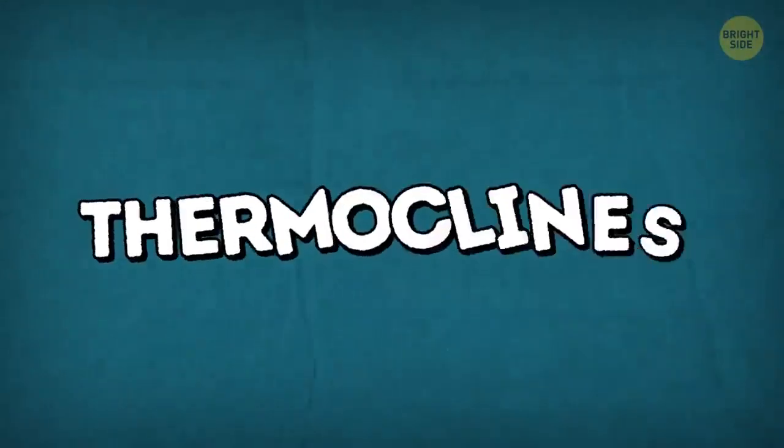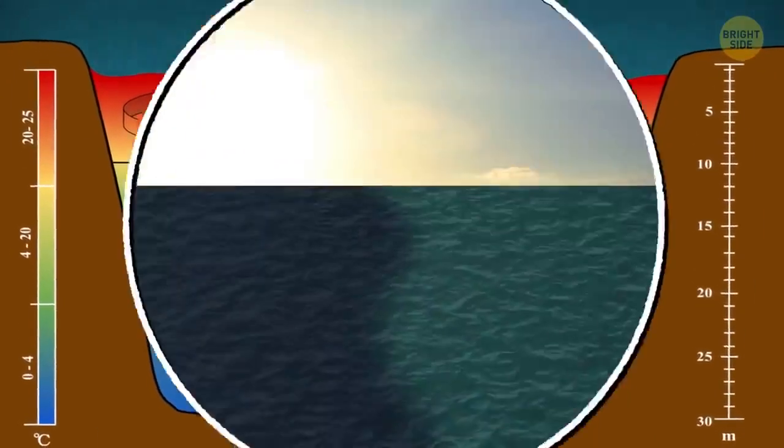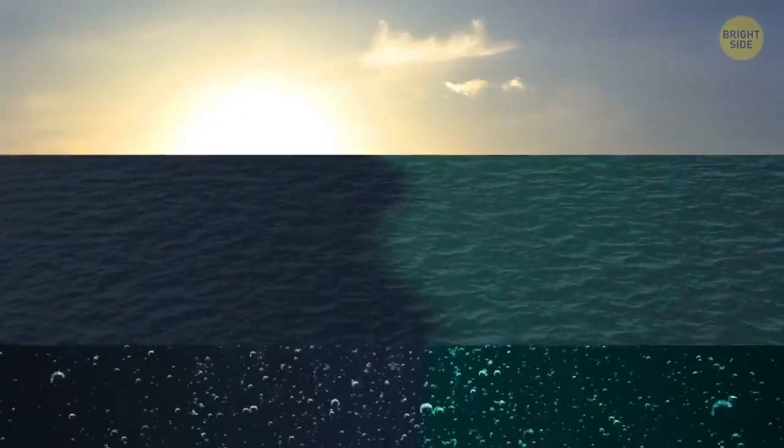There are also thermoclines, borders between water of different temperatures, like the warm water of the Gulf Stream and much colder North Atlantic Ocean.